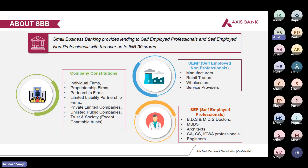Please pay attention to this slide — whom do we cater to? We give loans to segments where the turnover is between 30 lakhs to 30 crores. We offer loans to various company constitutions: individuals, proprietorship firms, partnership firms, LLPs, private limited companies, one person companies, unlisted public companies, trusts, and societies.